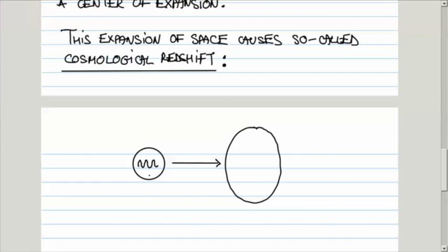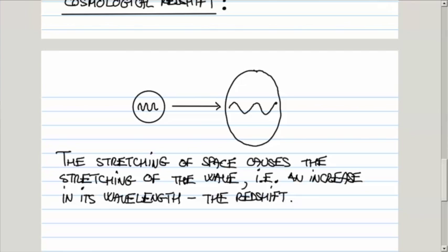As the space stretches, the wave itself will be stretched. What has happened is the same wave, but as a result of the expansion of space, its wavelength—that is, the distance from one crest to another—has increased. This type of redshift is what we call cosmological redshift.